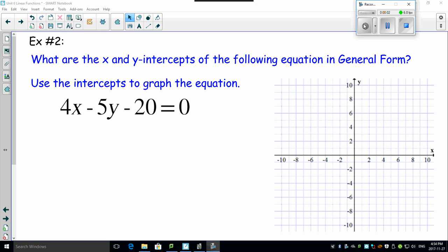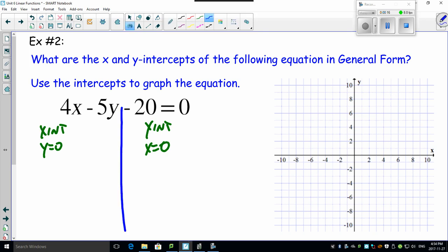Okay, general form, let's graph it. Same method: for x-intercepts, y equals zero; for y-intercept, x equals zero. Alright, so here we go. Let's do the first one. X-intercept, y equals zero, that means this...